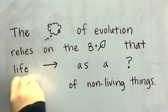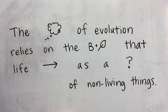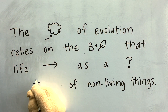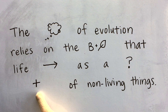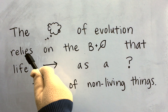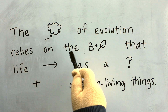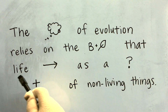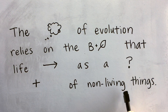Combination is when you add things together. And in math, when you add things together, you use addition, and addition is represented by a plus sign. So we are going to put a plus for the word combination. The theory of evolution relies on the belief that life began as a chance combination of non-living things.